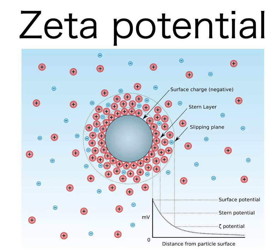When the potential is small, attractive forces may exceed this repulsion and the dispersion may break and flocculate. So, colloids with high zeta potential, negative or positive, are electrically stabilized, while colloids with low zeta potentials tend to coagulate or flocculate as outlined in the table.